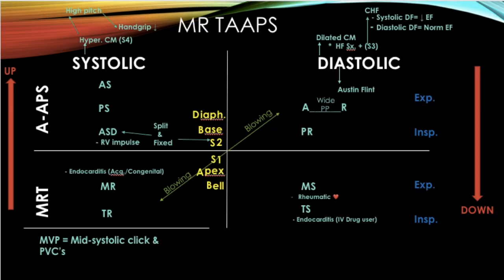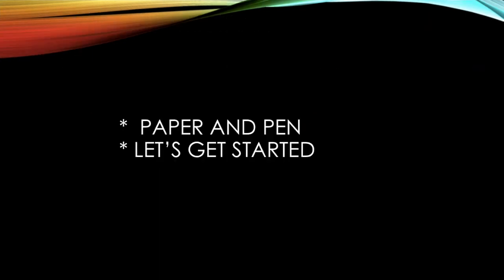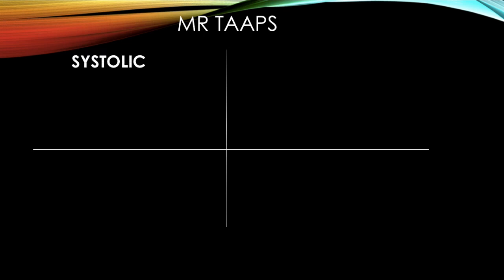Here's what the completed chart looks like. I know it looks like a lot, but the way we build it up it's not too overwhelming. Take out a pen and a piece of paper. The first thing you want to do is divide your paper into four quadrants, label the left side systolic and the right side diastolic. We'll add the first part of our acronym — Mr. Taps — with MRT in the bottom left corner. This is the base of how we build the whole chart, and it builds from one section to the next without rote memorization.